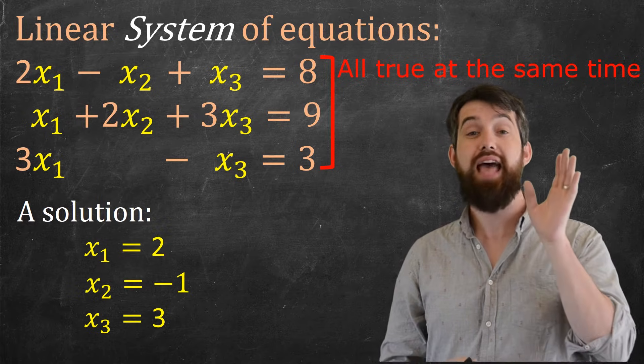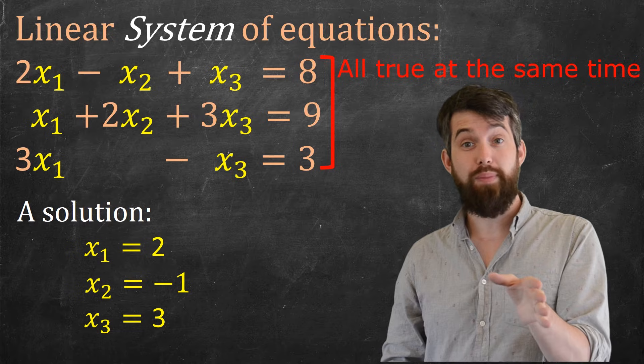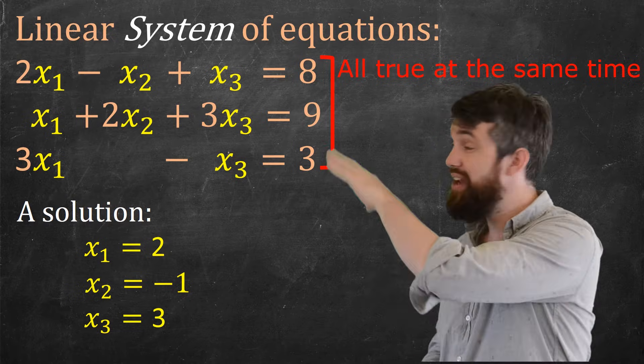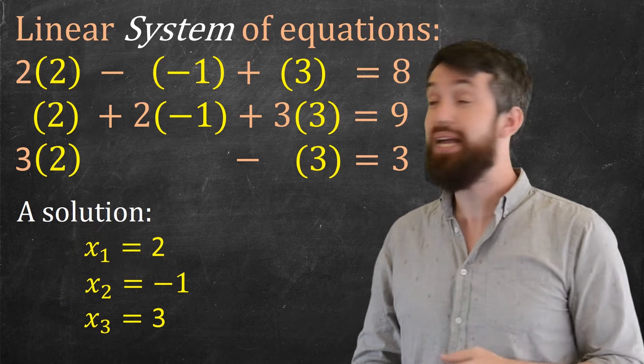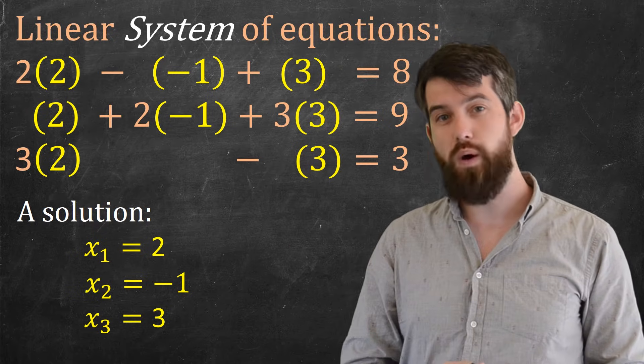So for example, if we look at that, 2, minus 1, 3. Well, if I plug that in everywhere I have an x1, an x2, or an x3, indeed it does satisfy. And we can plug it in and check that all of those numbers are indeed equalities.